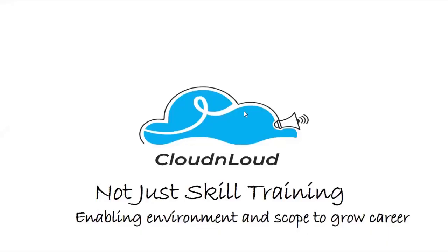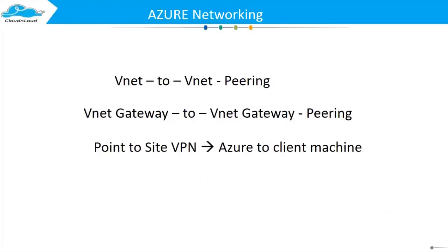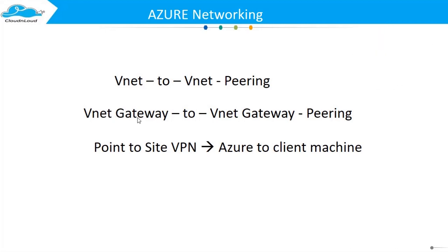Welcome back. In the last session we discussed Azure networking, specifically how to do cross-location virtual network to virtual network pairing. As we seen, there are three critical areas in Azure networking. One is virtual network to virtual network, and virtual network gateway to virtual network gateway pairing. Today we are going to see virtual network gateway to virtual network gateway pairing.